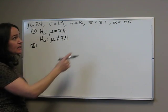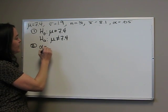Step two is our significance level. Just restate that alpha is 0.05.